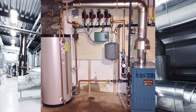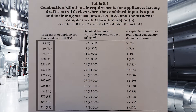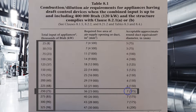Let's size some up. My first example is a drafthood equipped boiler that is 240,000 BTUs. Because my boiler is equipped with a drafthood, I'm going to use table 8-1. I go down the far left column to 240,000 BTUs — it isn't there, so I go to the next size larger, which is 250, and go right across to the far right column. I need a 7-inch round duct air supply.